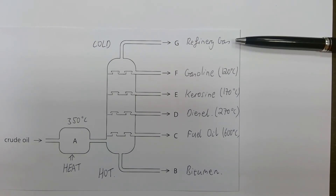The fraction with the lowest boiling point is called refinery gas. This is a mixture of hydrocarbons with one to three carbon atoms per molecule. This can be used to make the natural gas used in Bunsen burners and oven hobs. It does not naturally smell — the smell is added later by adding a gas called methanethiol, also known as mercaptan. This smells strongly of rotten eggs and is intended to alert us to potentially explosive gas leaks.